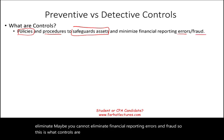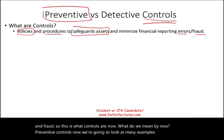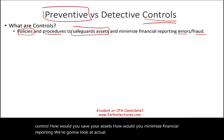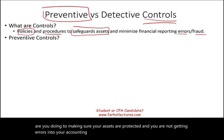Now, what do we mean by preventive controls? We're going to look at many examples that deal with control — how would you save your assets, how would you minimize financial reporting errors. The overall idea is: what are you doing to make sure your assets are protected and you are not getting errors into your accounting information system?